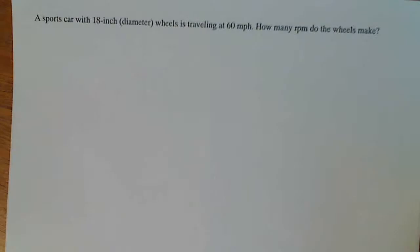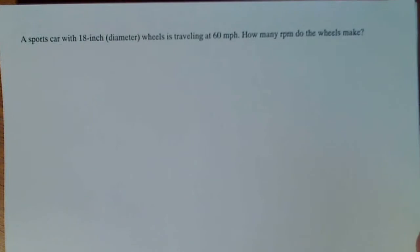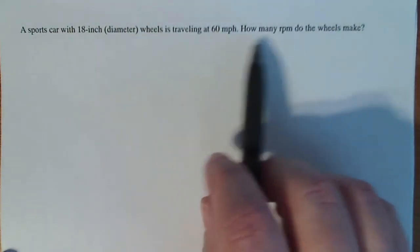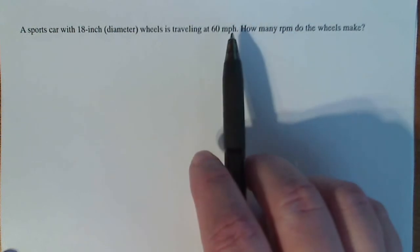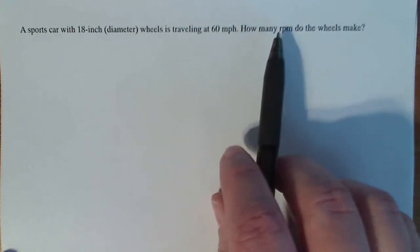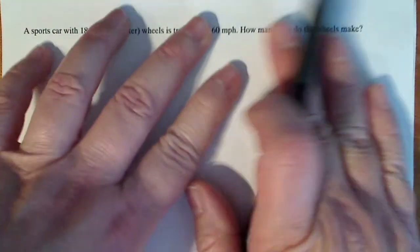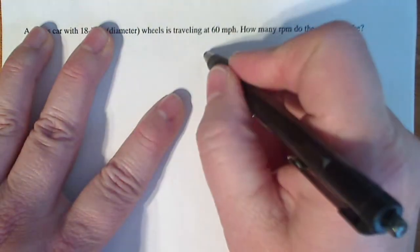Now in doing these problems with trigonometry, it's nice to know what it is we're given and what we have. If I'm talking about miles per hour versus RPM, that's linear velocity versus angular velocity.